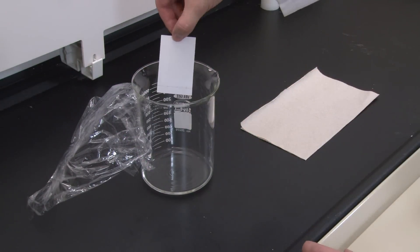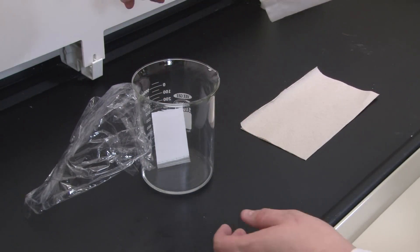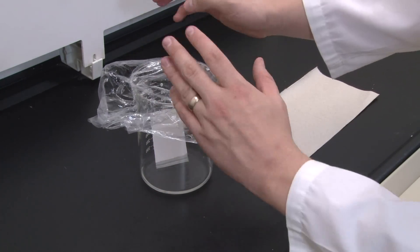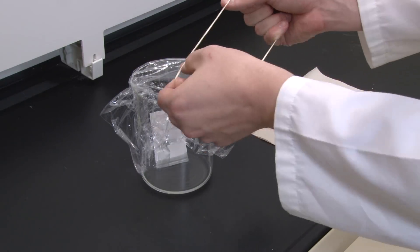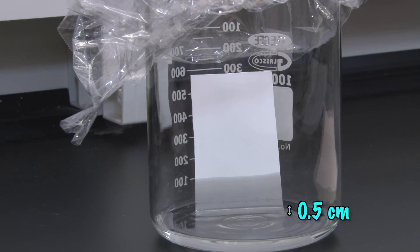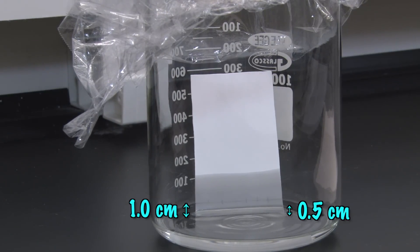Once all your spots look good, you're ready to carefully lower your TLC sheet into the developing chamber, and replace the cover. Make sure the sides of the sheet don't touch the beaker, and make sure the spots remain above the surface of the liquid. That's why we poured the developing solvent to a depth of one half a centimeter, while the spots were made one centimeter from the bottom of the TLC sheet.